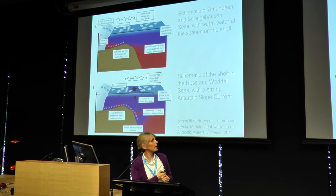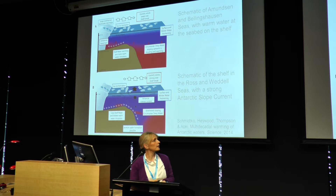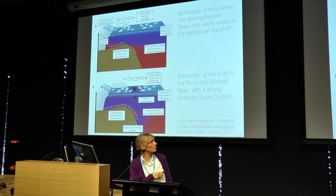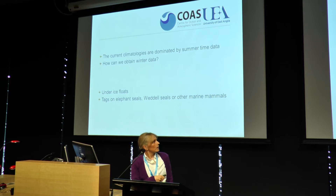The summary schematics that Sunke put together: the top figure is for the Amundsen and Bellingshausen regions, the areas where you've got relatively warm water coming onto the continental shelf. The bottom figure is for the Ross and Weddell Seas, where you've got the strong slope current and often bottom water formation. This shows the CDW shoaling upwards and warming, and we suspect that's associated with warmer water getting onto the continental shelf and increasing the melting of the ice shelves.